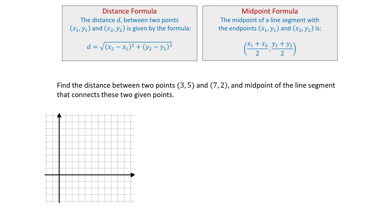And the midpoint formula. The midpoint of a line segment with endpoints (x1, y1) and (x2, y2) is: x1 plus x2 divided by 2, and y1 plus y2 divided by 2.